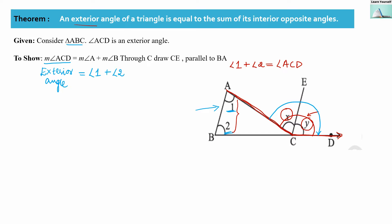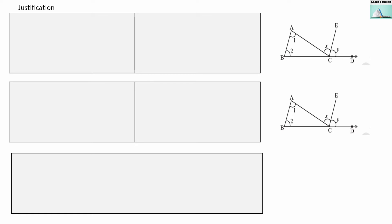So we are going to prove that angle x equals angle 1 and angle y equals angle 2. This we are going to prove based on angle properties — that is, corresponding angles and alternate angles. In this figure, if we concentrate on line segments AB, AC, and CE, and we take line segment AB and line segment CE, then AC here is a transversal.